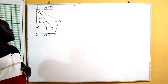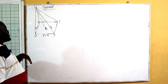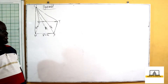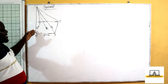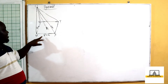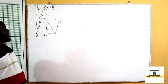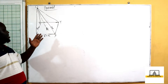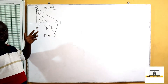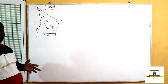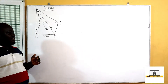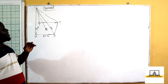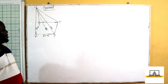Looking at our diagram, WXYZ is a rectangular base with sides 6 centimeters and 8 centimeters. We know the volume of a pyramid is one third the area of the base times the height, but we don't know the height yet, so we have to start by finding the height first.